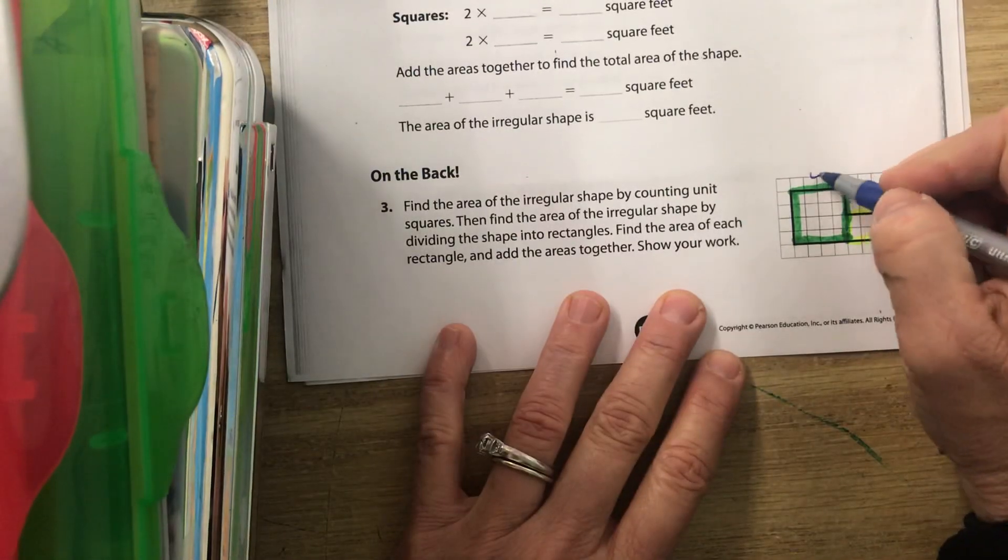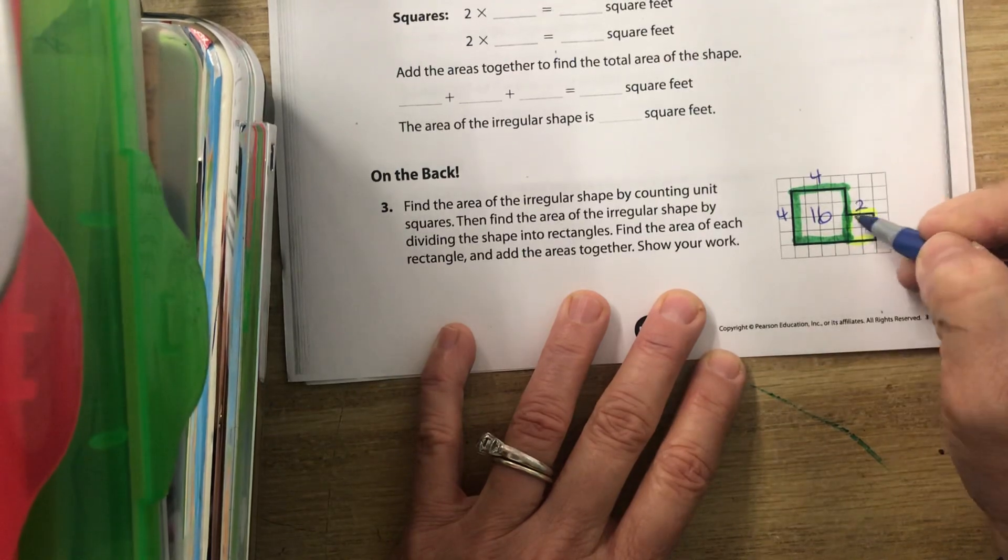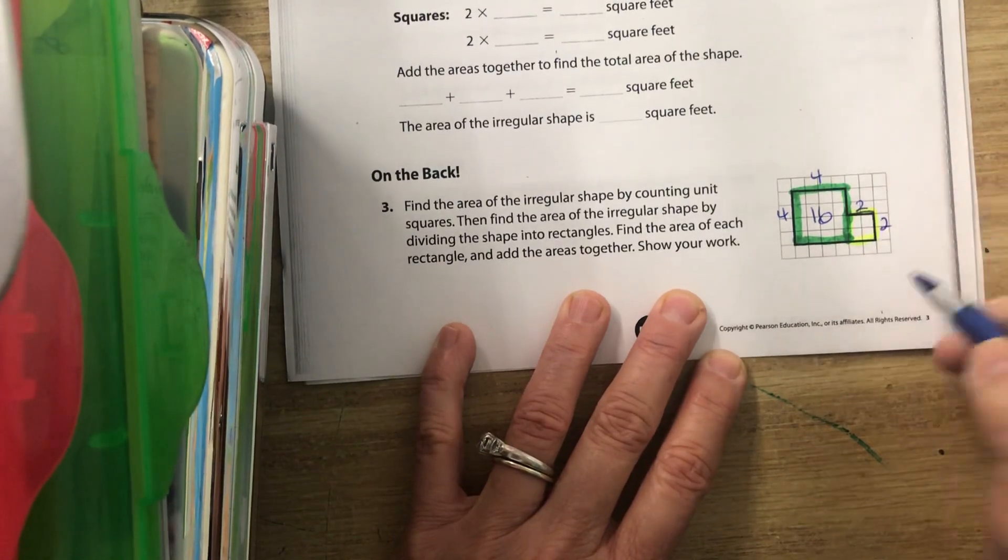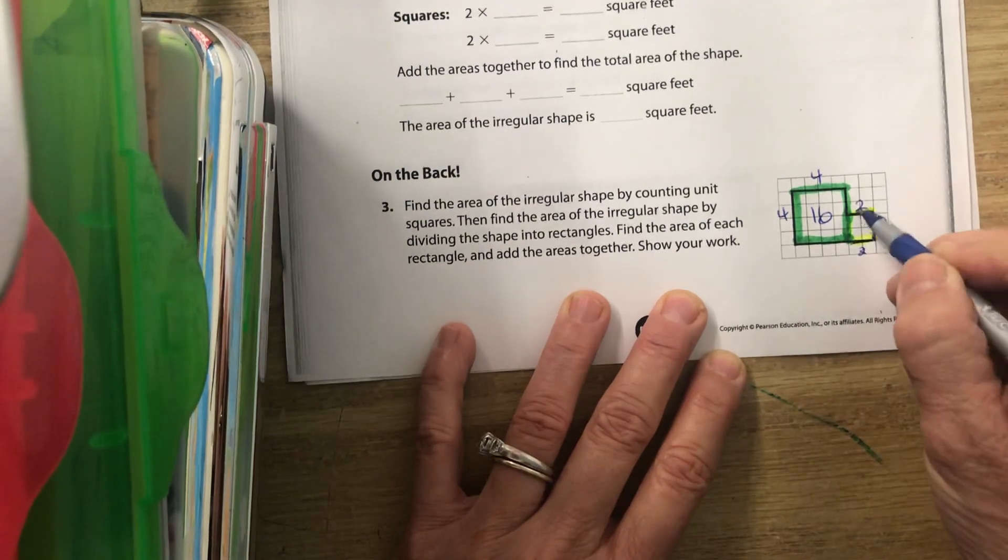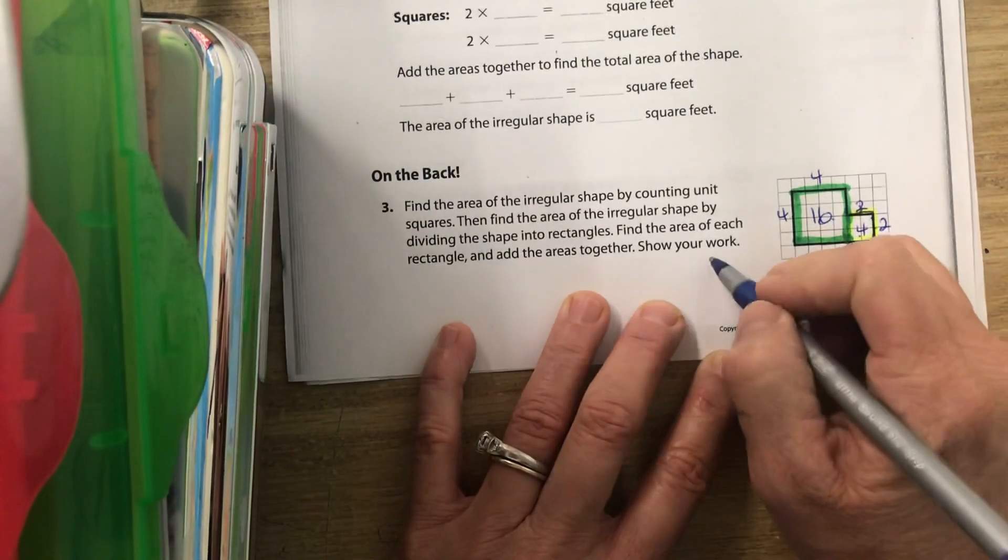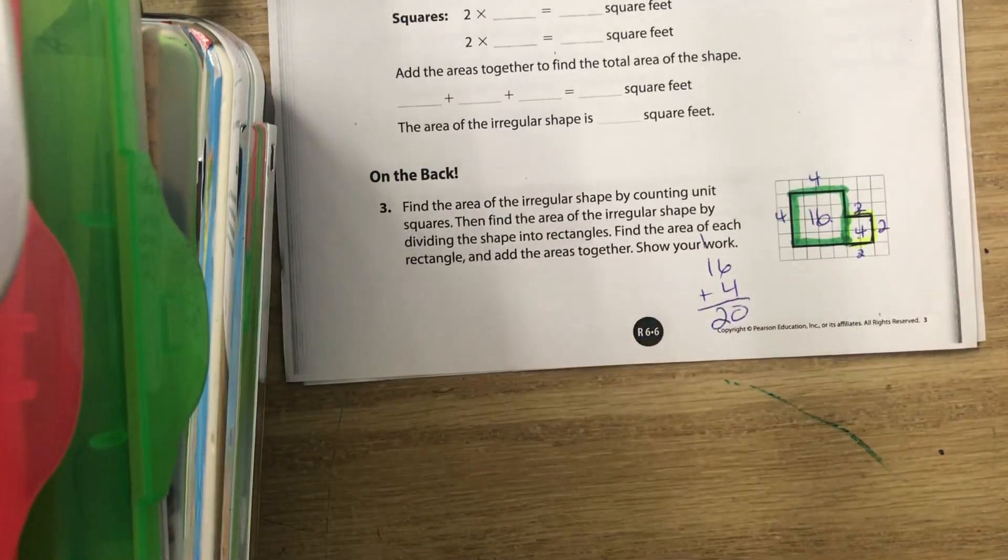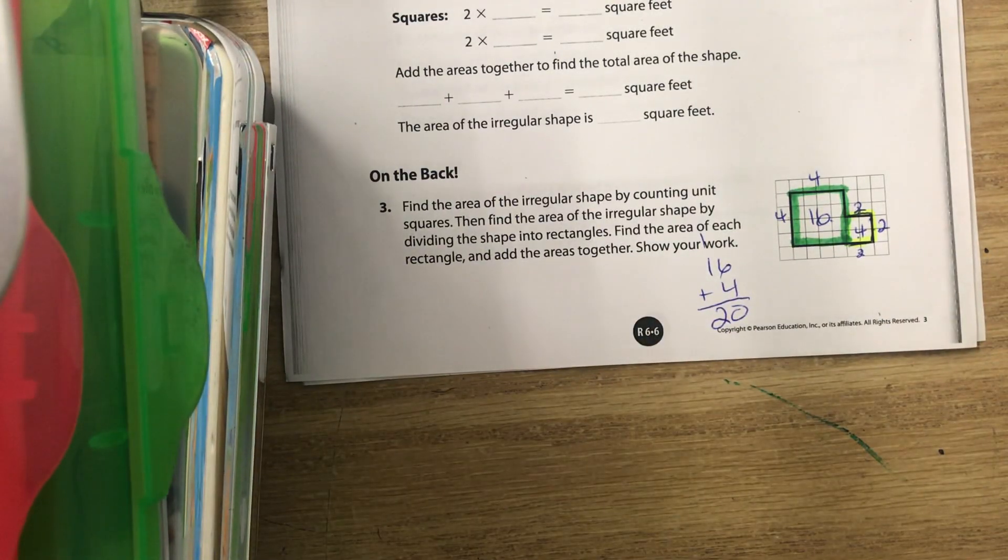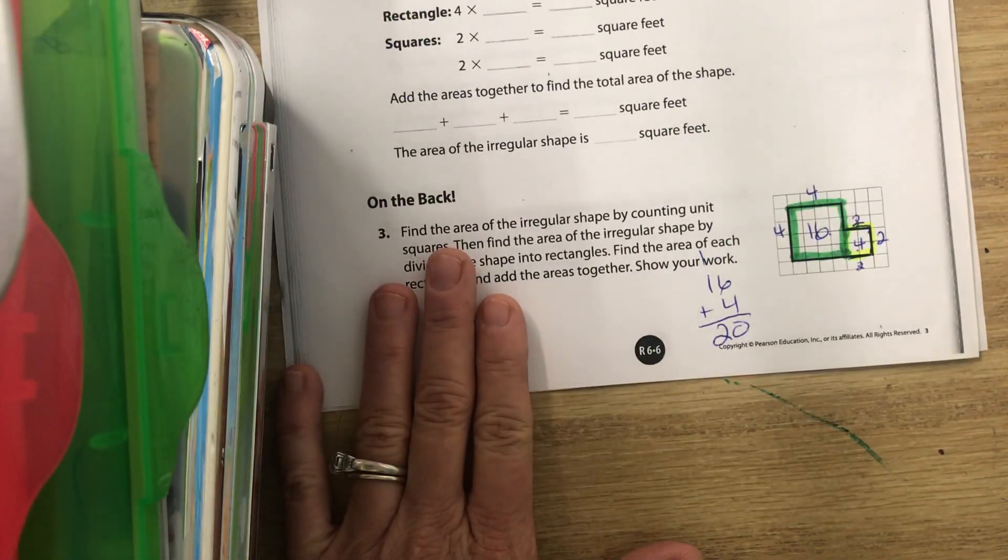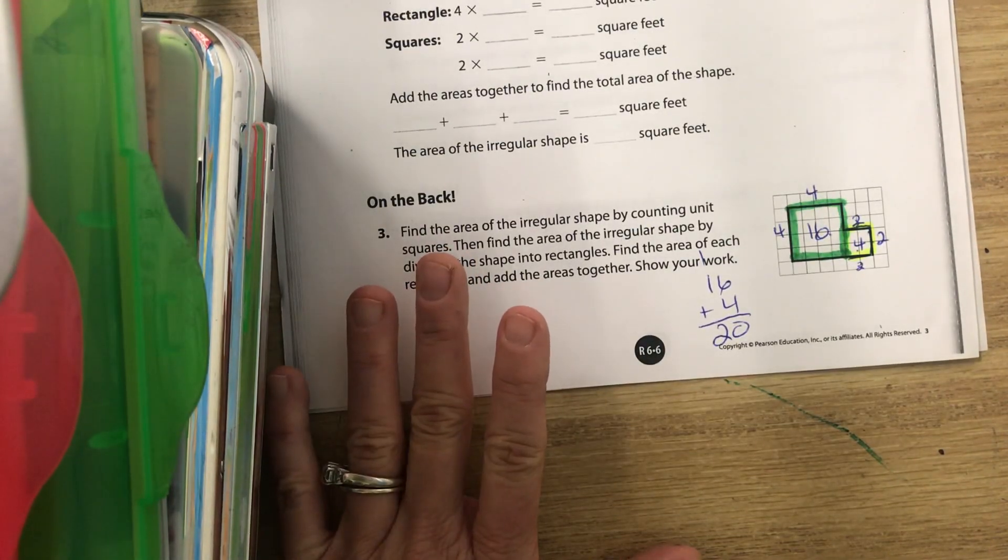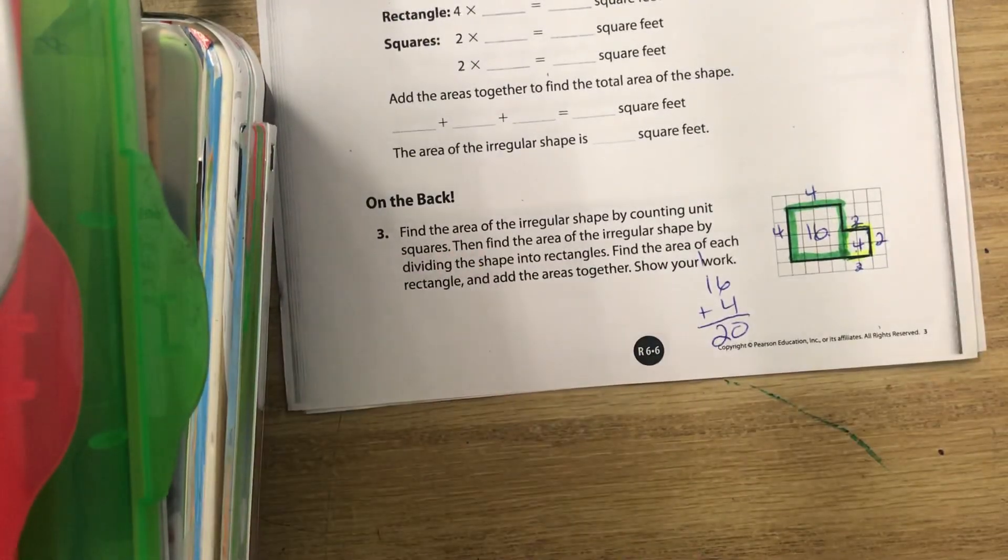Okay, so you should have four and four, which is 16, and then you should have two and two. It would have been the same if you did two here, two and two. But two times two is four, and then you would do 16 plus four is 20 square units. So it doesn't matter which way that you break up these shapes, as long as you're breaking them up into squares and rectangles, and you're calculating the area of each one and then adding them up.